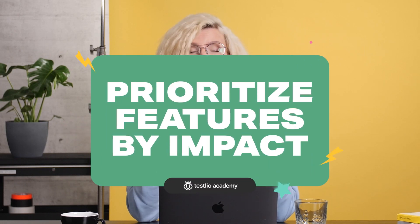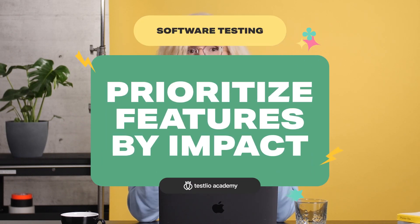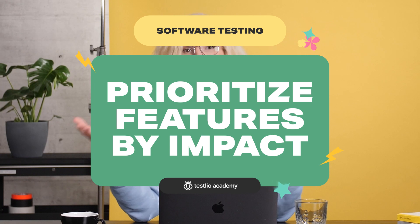From there on, you can intuitively start prioritizing the features by impact. For example, for the customer to be able to log in and access her data is a must-have. If a client is unable to do that, it means they can't use the software at all. That's pretty bad.